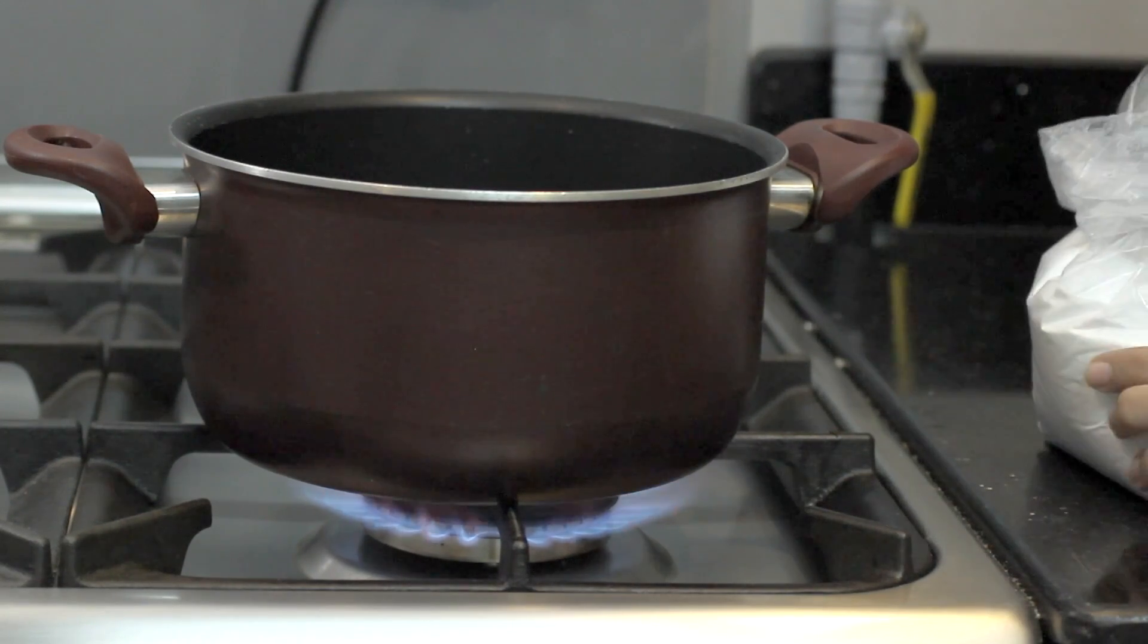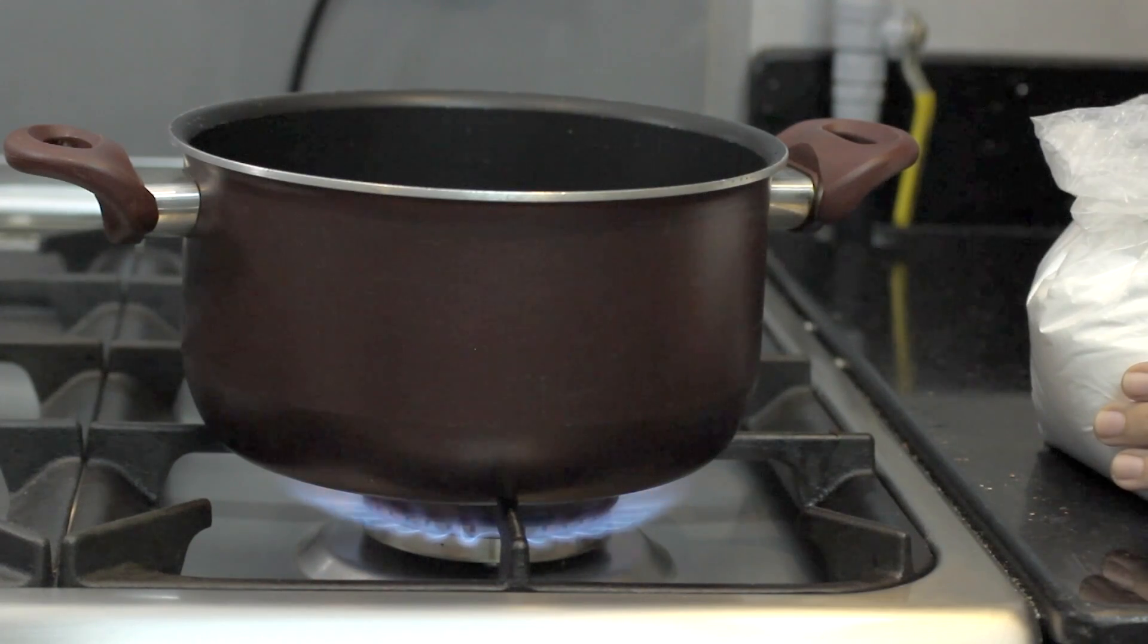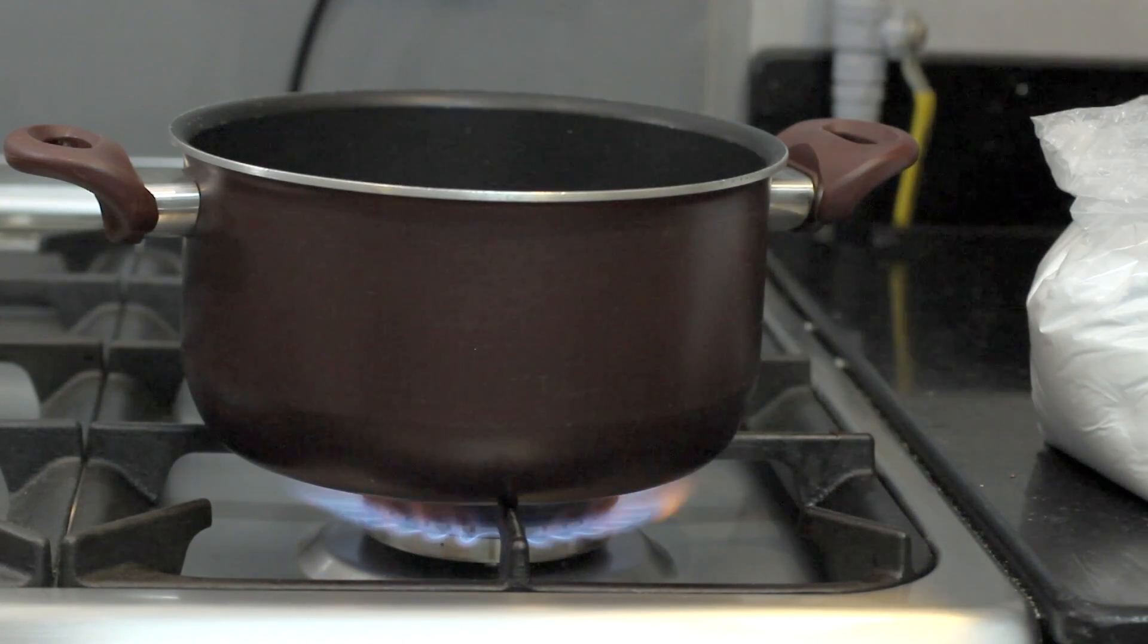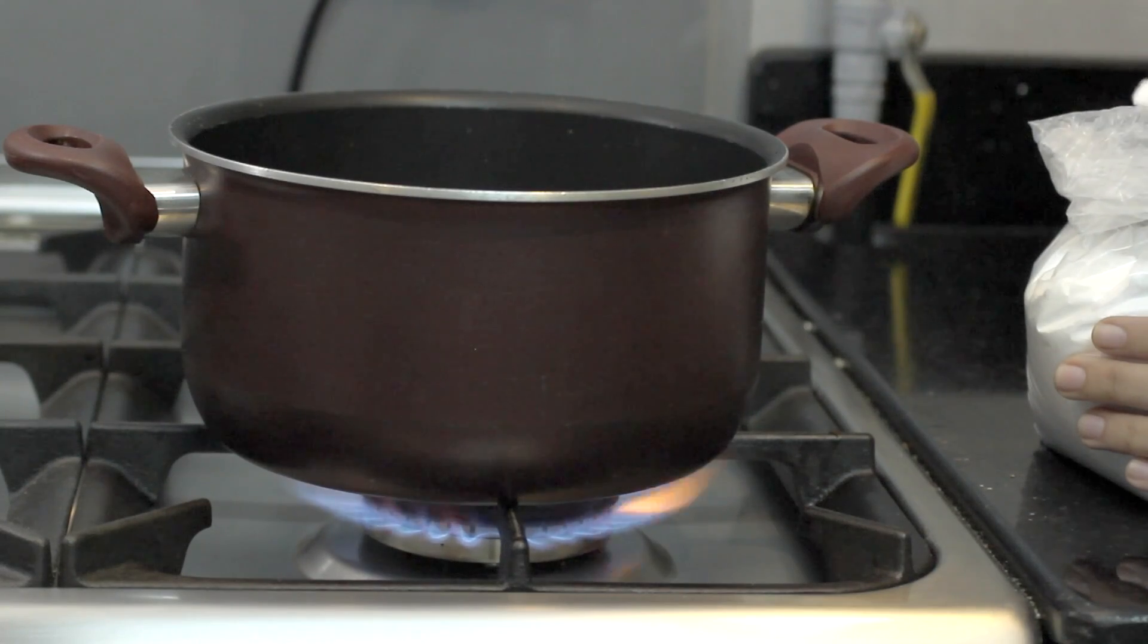To begin, I poured some baking soda into a pot and put it on the stove. You can also bake it in the oven, but I prefer this method because you can really tell when the washing soda is ready.